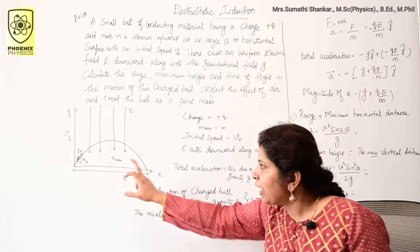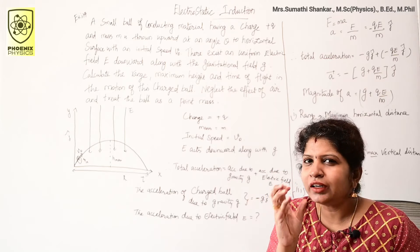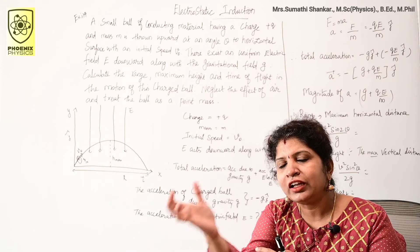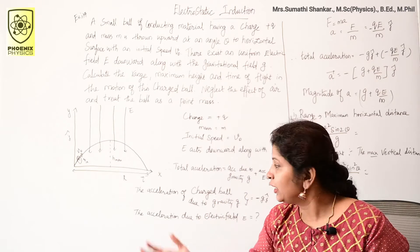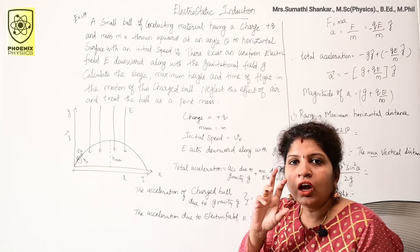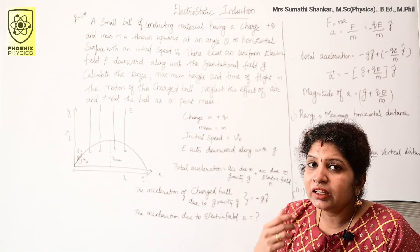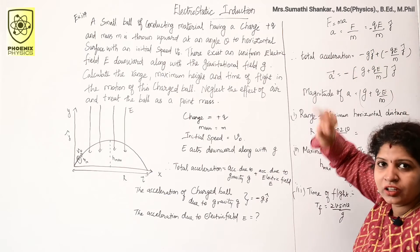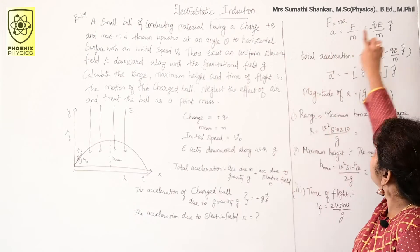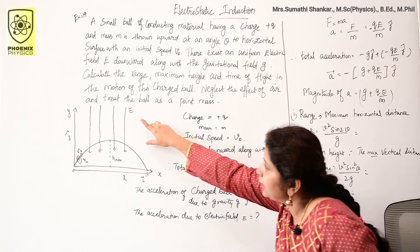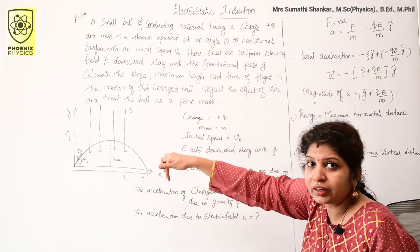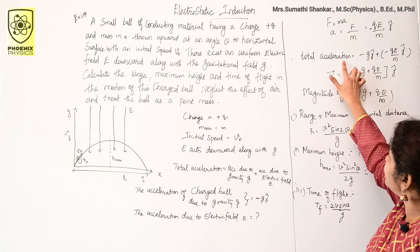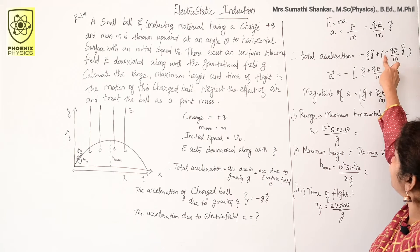Next, the acceleration due to the electric field E. Here we have a charged ball — unlike an uncharged ball which has only mass, a charged ball placed in a uniform electric field will accelerate. According to Newton's second law, F = ma, so acceleration = F/m. The force on the charge is F = qE, so the acceleration due to the electric field is −qE/m ĵ, since the field acts in the negative y-direction. The total acceleration is then −(g + qE/m) ĵ.